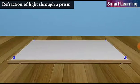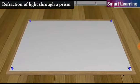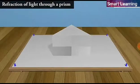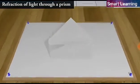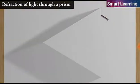Let us now do an activity to study the refraction of light through a triangular glass prism. Fix a sheet of white paper on a drawing board using drawing pins. Place a glass prism on it in such a way that it rests on its triangular base. Trace the outline of the prism using a pencil.